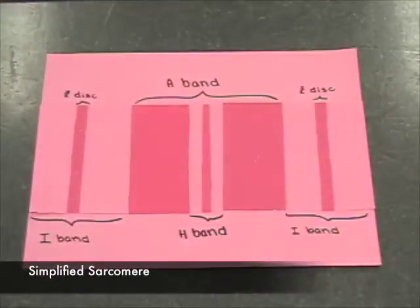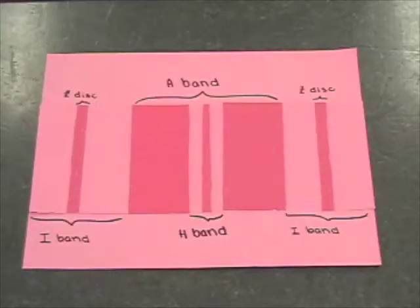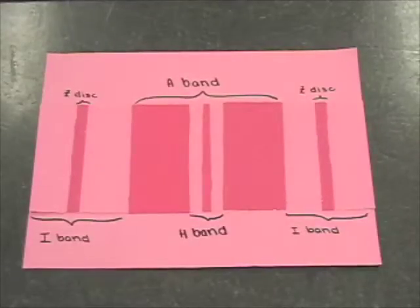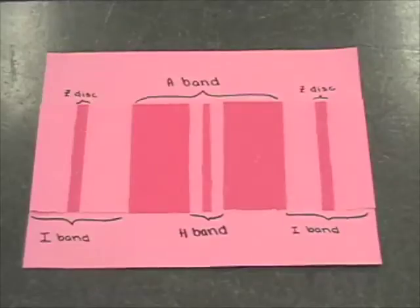Here we can see a representation of the sarcomere with some of the basic regions in it. The A-band is a dark middle part of the sarcomere that contains the thick filaments and also the portions of the thin filaments that overlap.